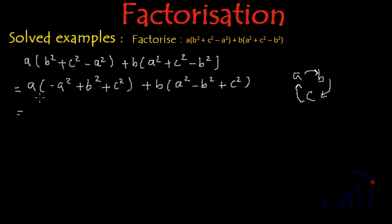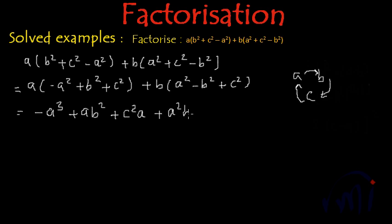Now let's open the brackets. A multiplied by minus A squared gives us minus A cubed, plus AB squared, plus C squared A, plus A squared B, minus B cubed, plus BC squared. Now let's arrange the terms.